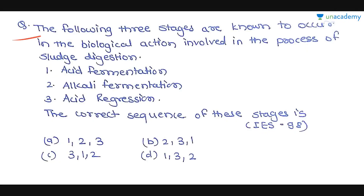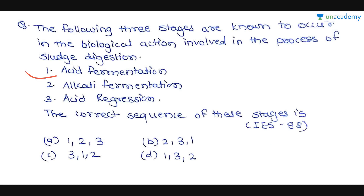The next question, asked in IES 1998, is: the following three stages occur in the biological action involved in sludge digestion — 1) acid fermentation, 2) alkaline fermentation, 3) acid regression. Put them in the correct sequence. The correct sequence is: first acid fermentation, then acid regression, then alkaline fermentation — that is 1, 3, 2. So option D is the correct answer.